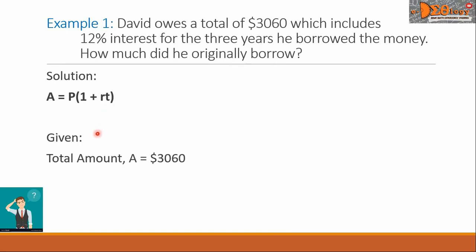Let us now list the given of the problem. First is the total amount, denoted by A, and that is the $3,060. Next is the rate, denoted by R, and that is the 12%.